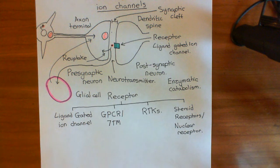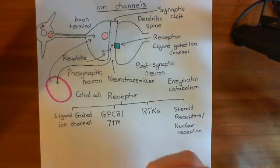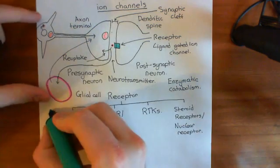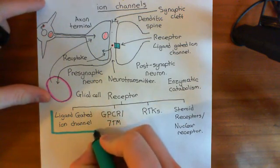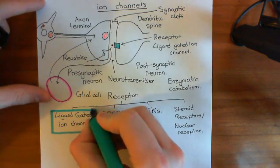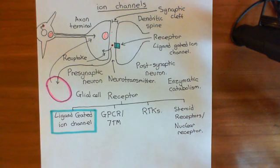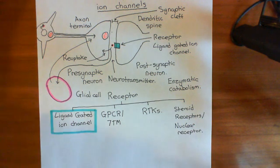That's a summary of neurotransmission and the different types of receptors. Now we'll focus in on ligand-gated ion channels and see the three different families that exist, one of which is the cis-loop ligand-gated ion channels — but we'll see that in the next video.